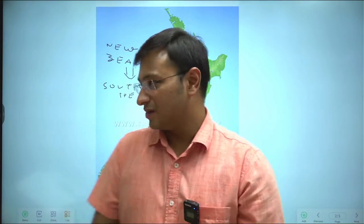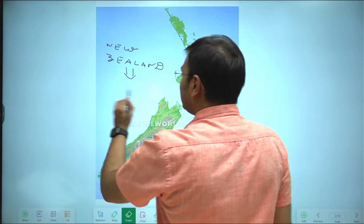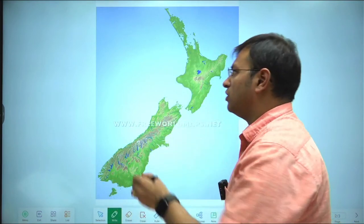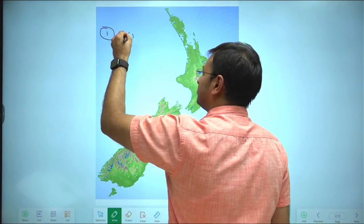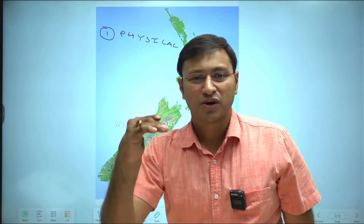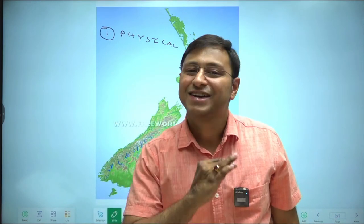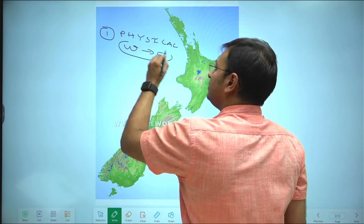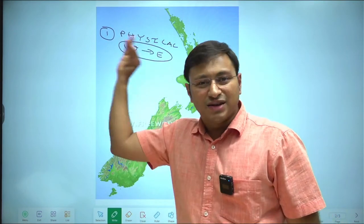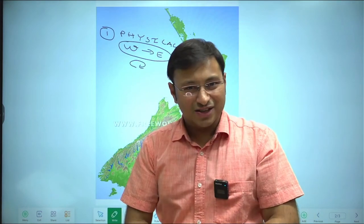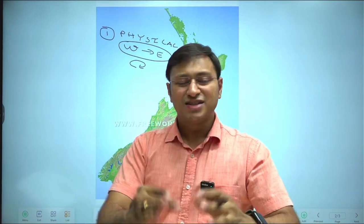For any of the maps I venture into, I will be using a five-classification model. The first thing I will discuss with any location is the physical aspects — please keep this in mind. Physical aspects means water bodies, mountains, rivers, valleys, lakes, depressions, and grasslands. Predominantly I will be discussing from west to east, following a clockwise direction.